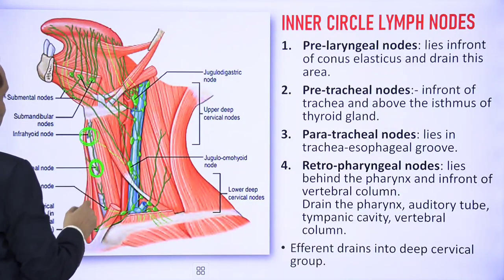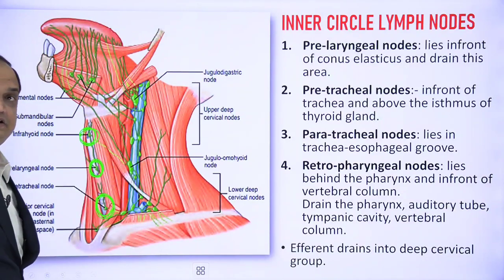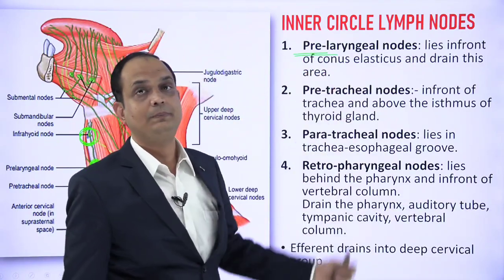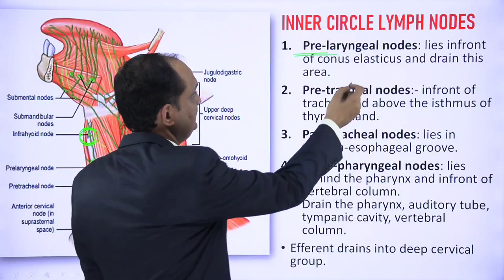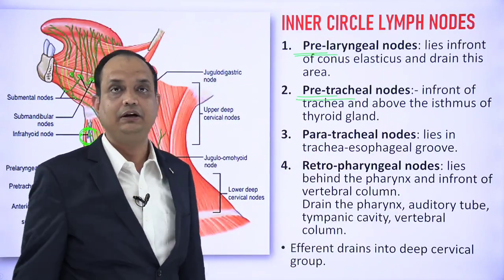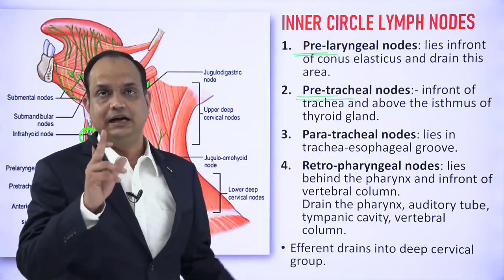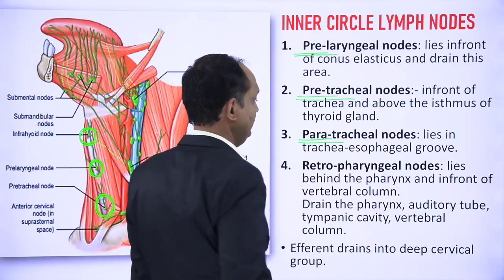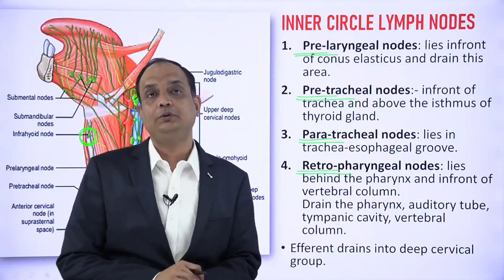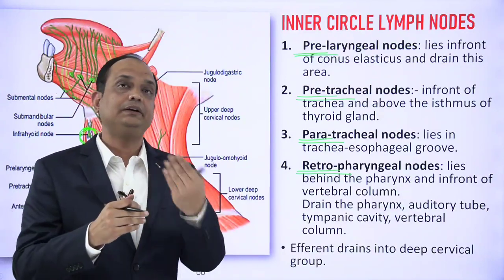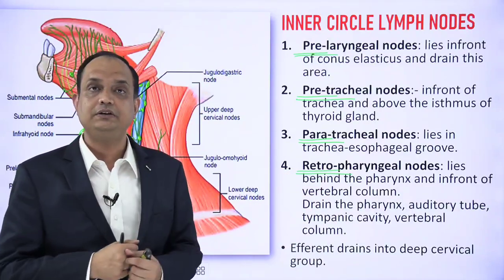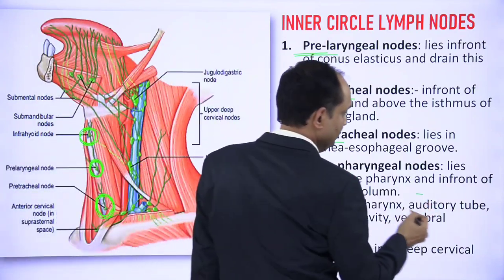The pre-laryngeal group is in relation to the conus elasticus — the lower part of larynx below the vocal cord — and drains this part of the larynx. The pre-tracheal group is present in front of the trachea above the isthmus of the thyroid gland and drains the trachea and thyroid gland. The paratracheal group is present along the tracheo-oesophageal groove. The retropharyngeal group lies behind the pharynx in front of the vertebral column in the retropharyngeal space, draining the posterior pharyngeal wall, vertebral column, auditory tube, and middle ear cavity.